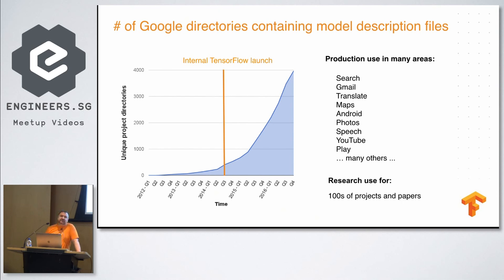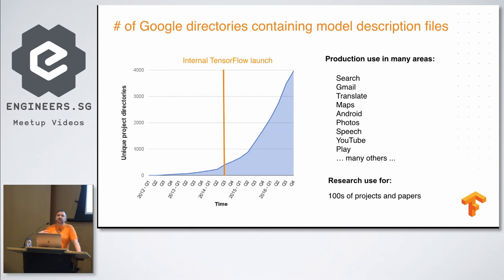Deep learning is now being used inside Google for all these different products. Google is definitely leading the way, but everyone else is following behind. You're going to see more and more that most digital products will use machine learning — companies like Netflix are making extensive use of this technology.